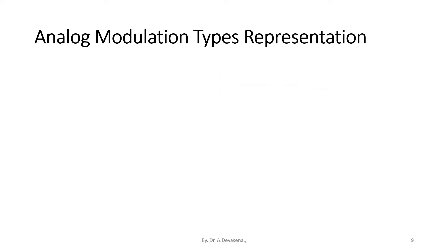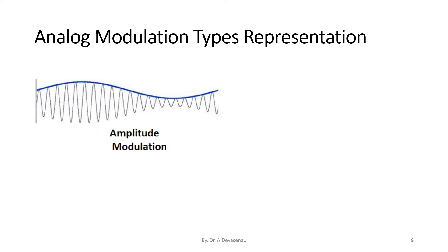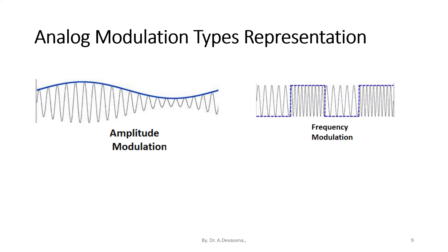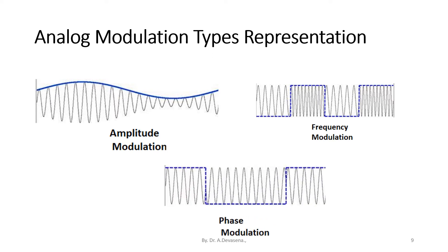Here is a representation of analog modulation types. In amplitude modulation, the amplitude of the carrier signal is varied. In frequency modulation, the frequency of the carrier signal is varied. In phase modulation, the phase of the carrier signal is varied.